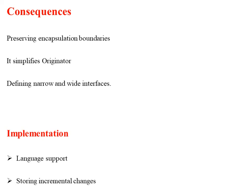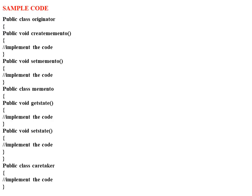The second implementation technique is storing incremental changes. When mementos are created and passed back to their originator in a predictable sequence, the Memento can save all the incremental changes to the originator's internal state. By storing all these incremental changes, the pattern is implemented. This is one of the implementation techniques.